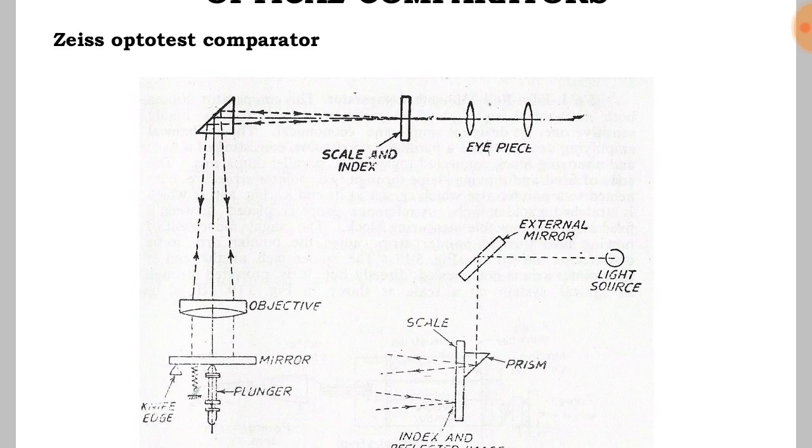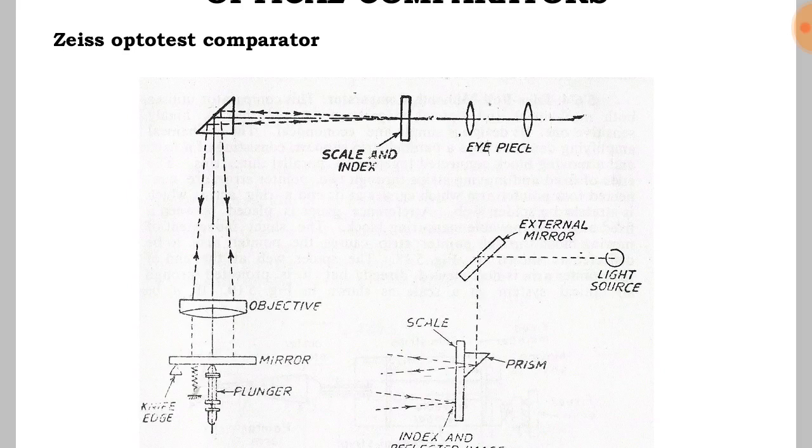This is a commercial measuring instrument. This utilizes a plunger, tilted mirror, objective lens, prism, and observing eyepiece to provide a high degree of magnification. The mirror is mounted on a knife edge and it can be tilted about the fulcrum by any linear vertical movement of the contact plunger.